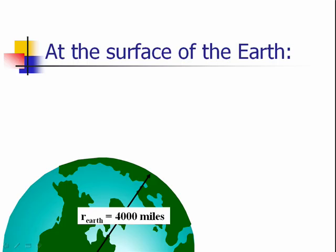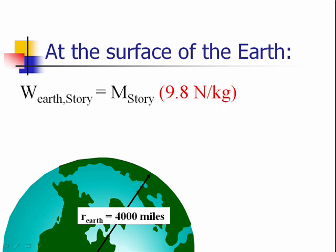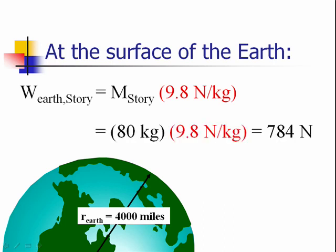When Story is standing in his bathroom, on a bathroom scale, he's about 4,000 miles from the center of the Earth. At that distance, the gravitational field strength is 9.8 Newtons for each kilogram, and that's going to give a gravitational force, with the 80 kilograms mass of Story, of 784 Newtons.